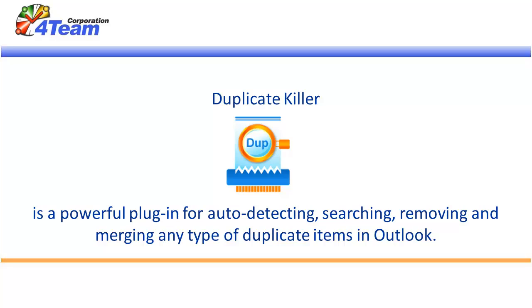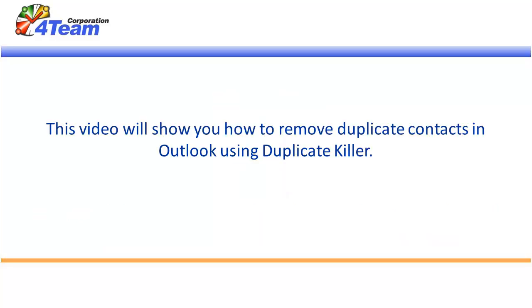Duplicate Killer is a powerful plugin for auto-detecting, searching, removing, and merging any type of duplicate items in Outlook. This video will show you how to remove duplicate contacts in Outlook using Duplicate Killer.